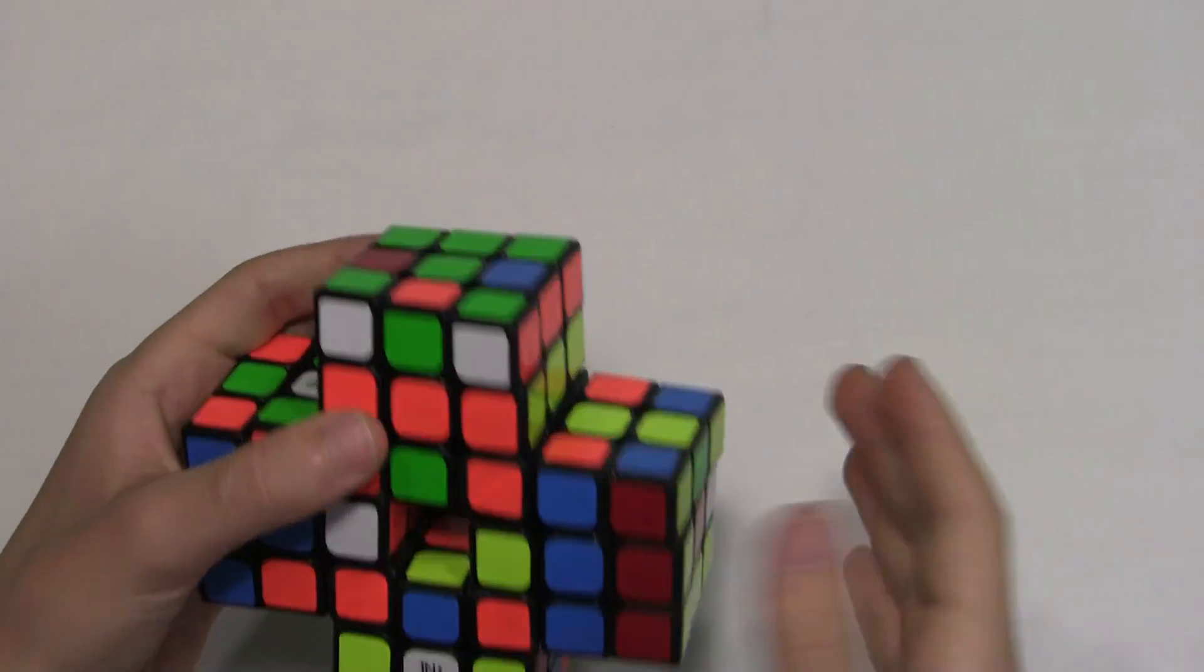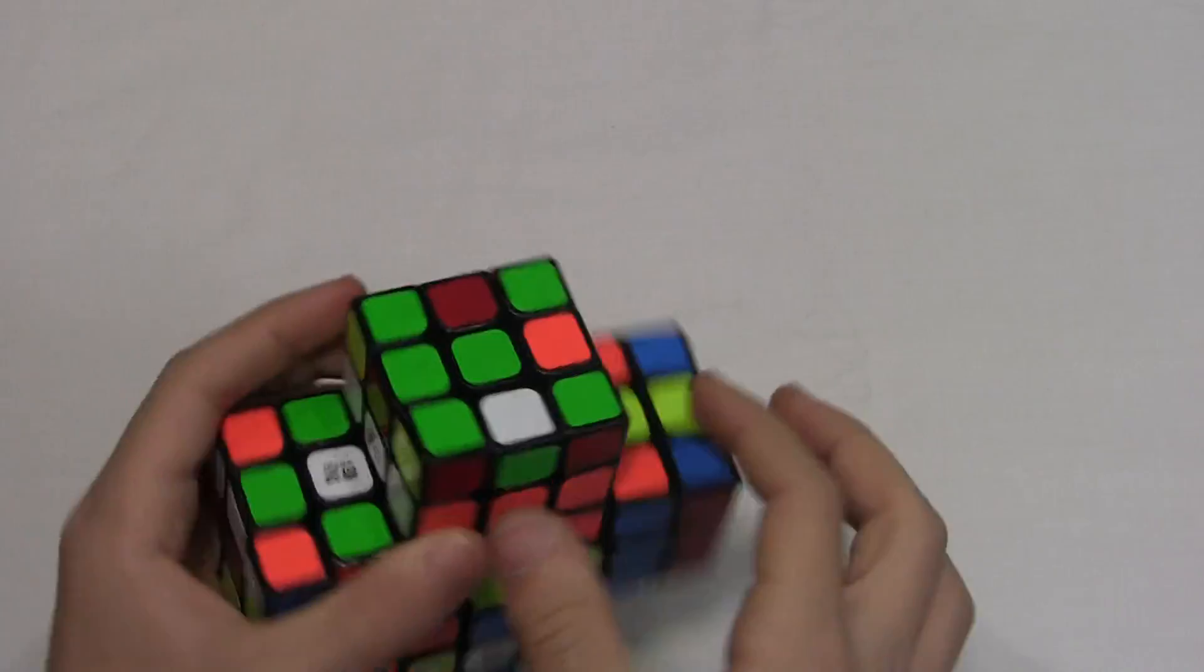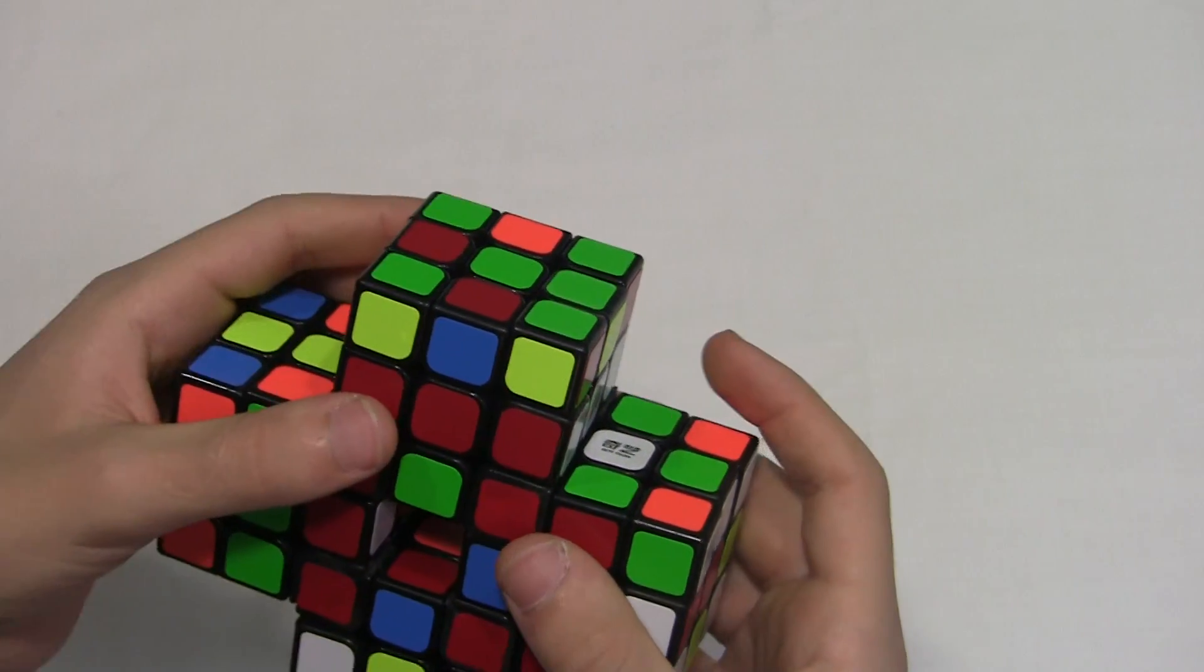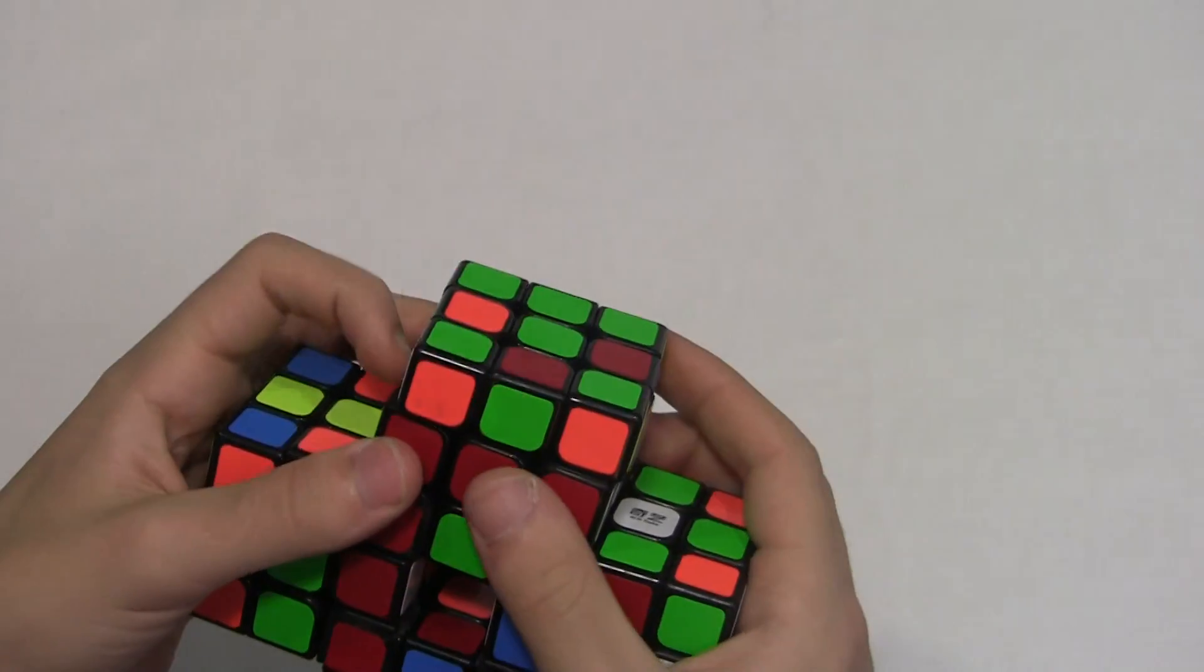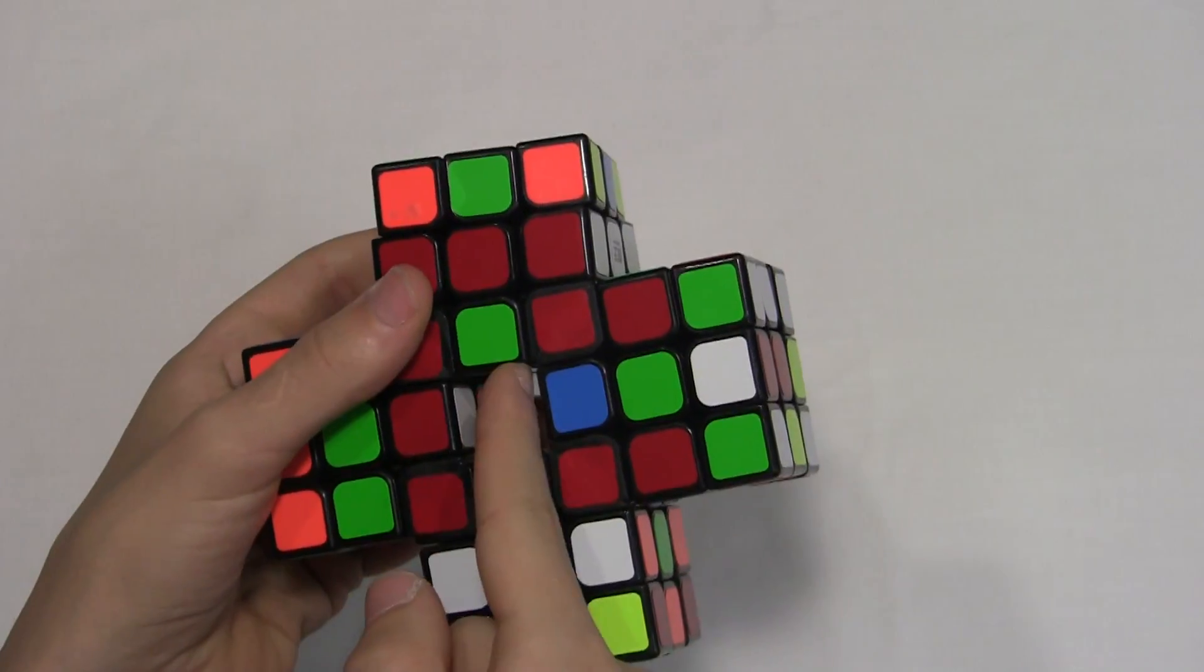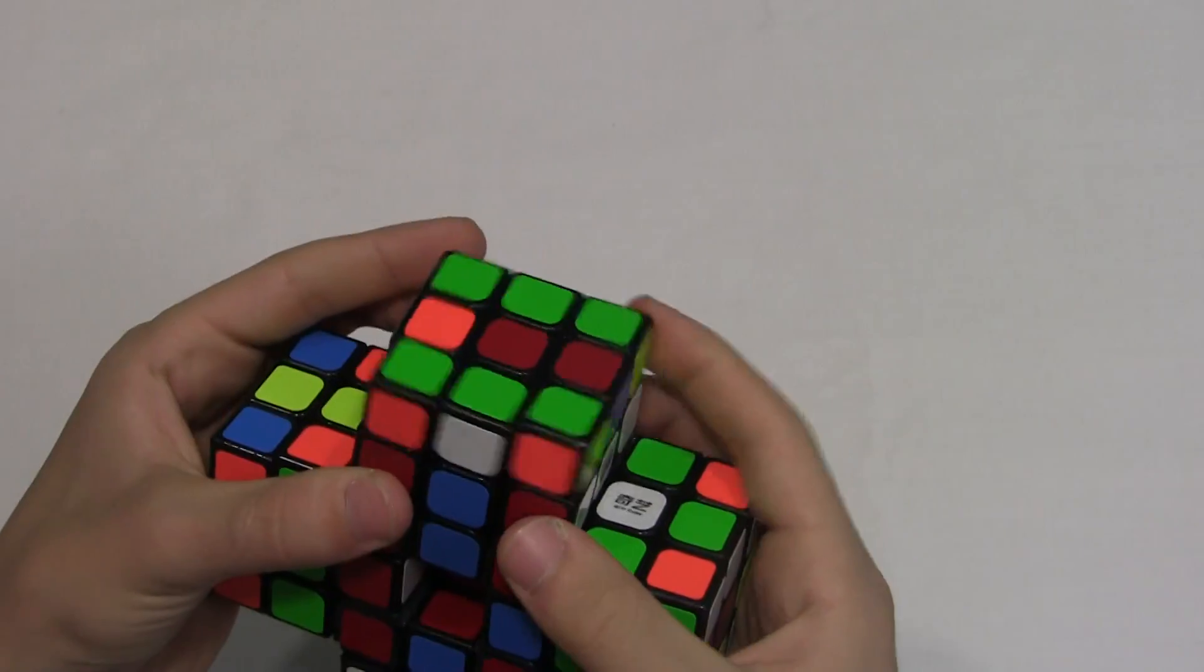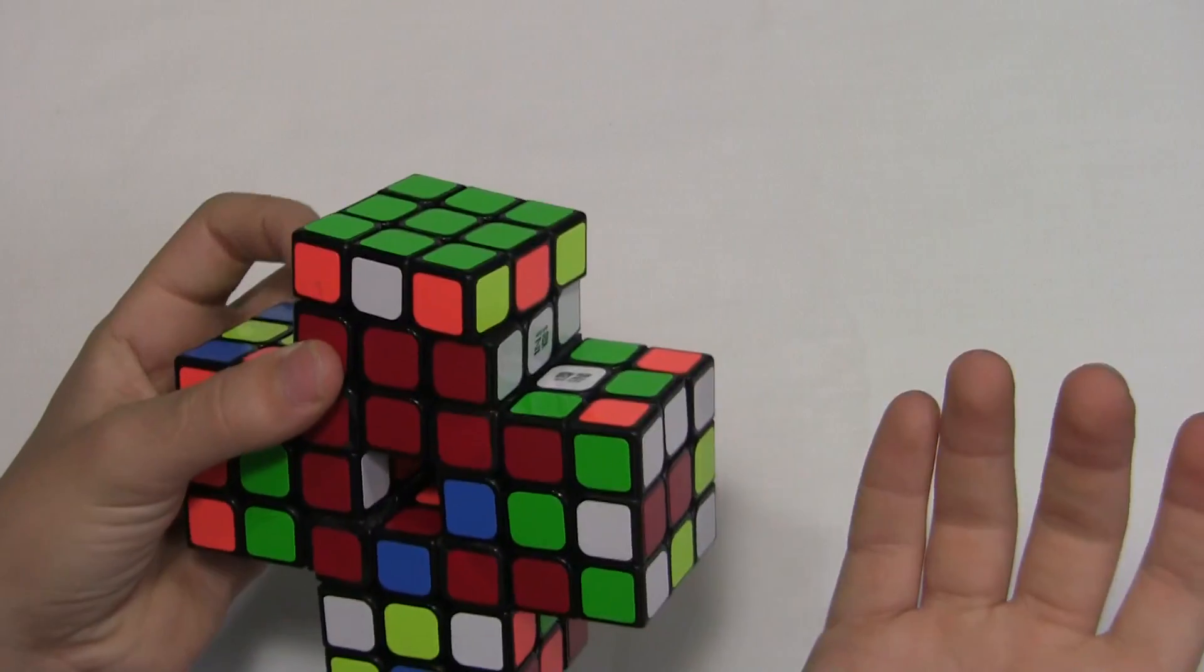And there's only two bottom pieces, so that makes it really easy. You just have to do simple middle moves to put the bottom layer in. Just like that, and it's solved.